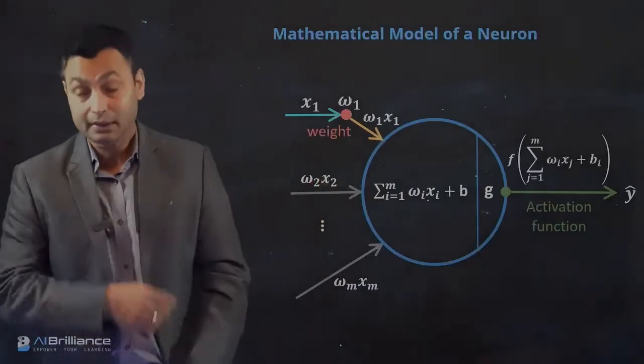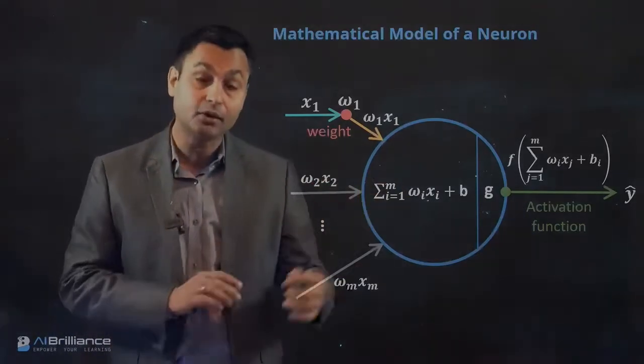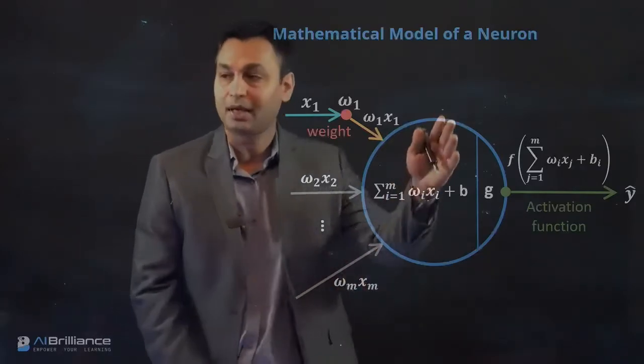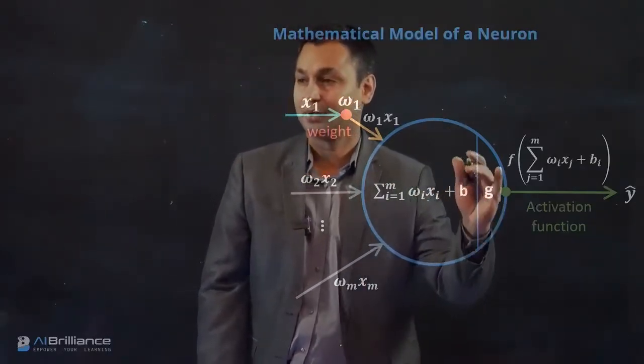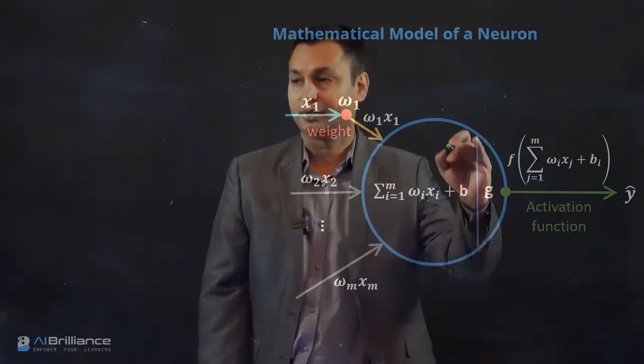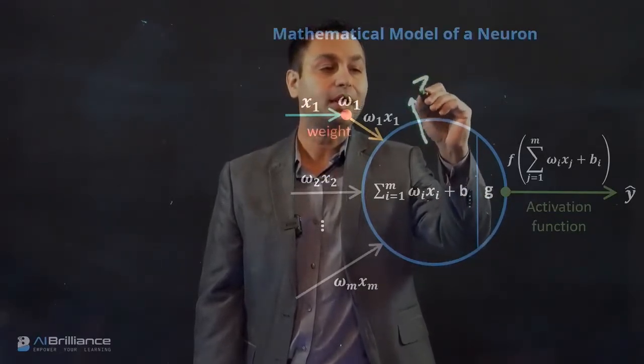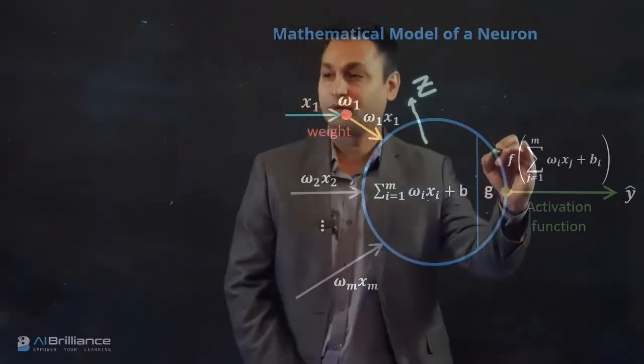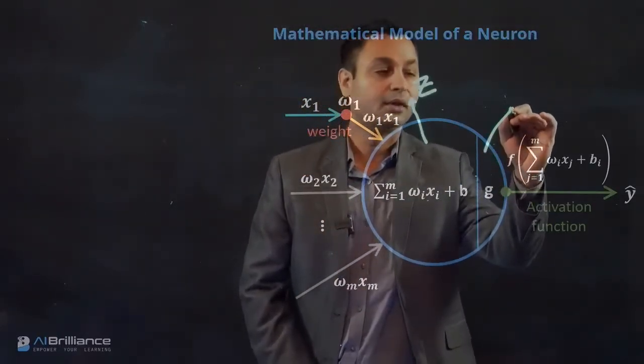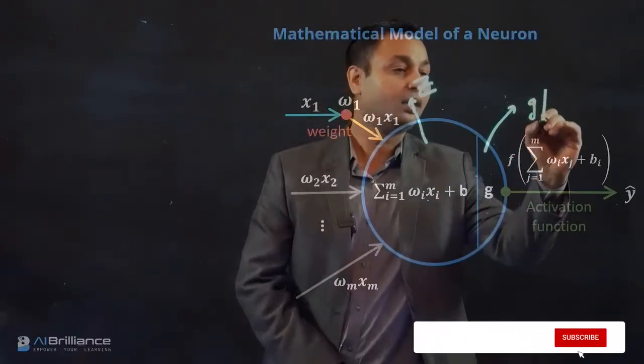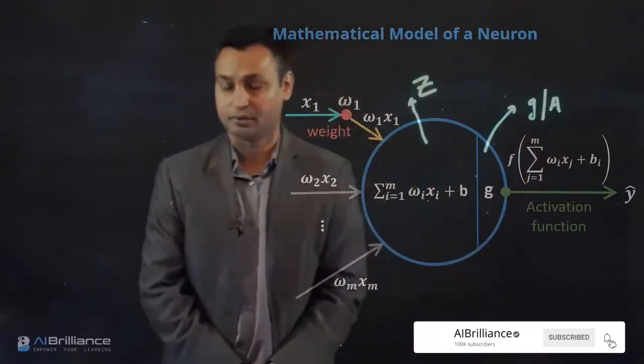What each neuron in a neural network does is two computations, and those are marked by the computation that you have separated by the lines. This portion will do what is known as Z computation, and this portion is known as the G or activation computation. So those are the two computations that are done by a neuron.